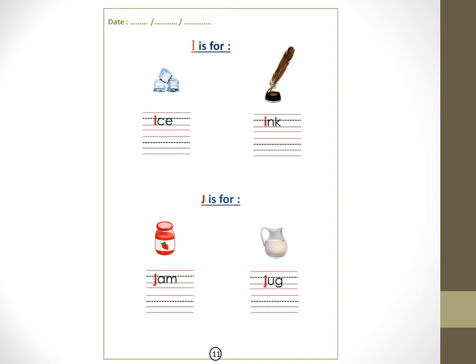Let's write the words that start with I. Write the word 'ice' and write the word 'ink' — I, I, ink. J, J — jam. J, J — jug.